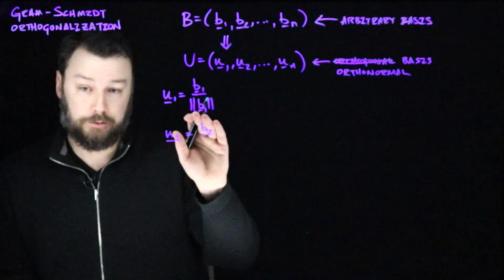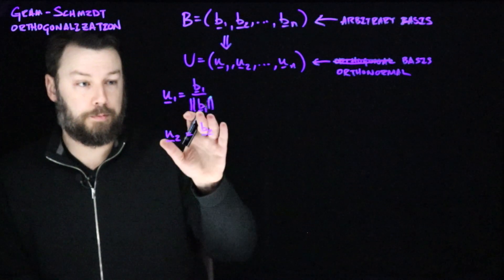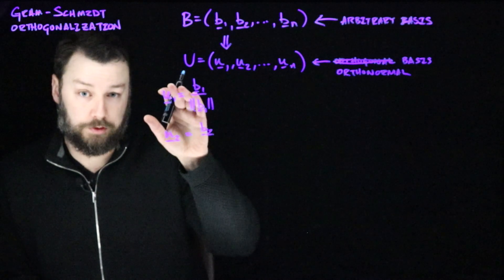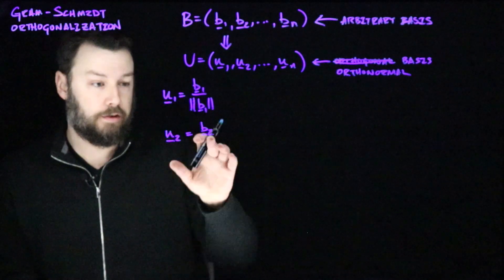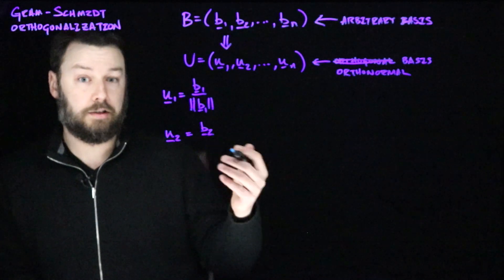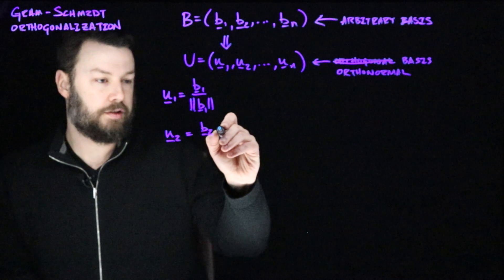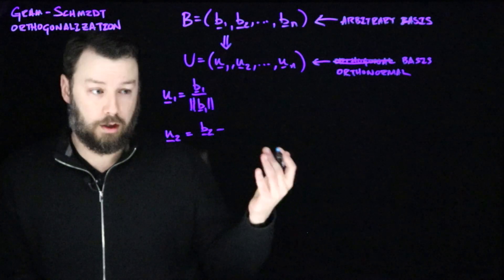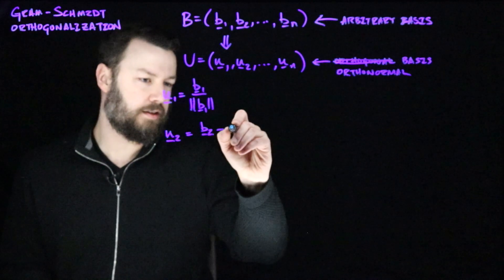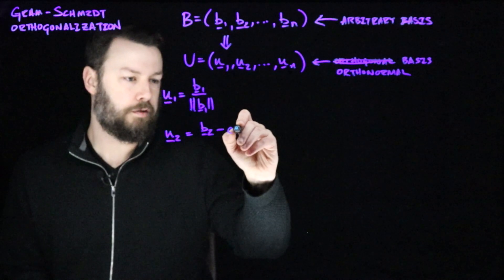Now we need to subtract from b2 anything that is not perpendicular to u1. That is to say, because we want u2 to be orthogonal to u1, then we somehow need to remove all of the u1-ness from this vector. So we're going to do that using orthogonal projection like we did in the last lecture. Let's imagine what we're going to do is remove from b2 some amount of u1. Just for now, let's just imagine that let's call that amount c of u1.